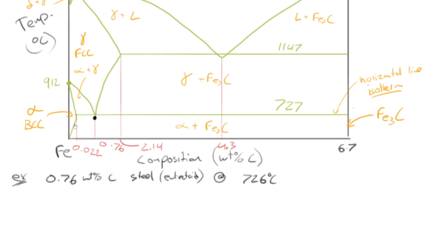And so what phases are present? Well, you can see you're within the boundaries of this two-phase region, alpha plus Fe3C. So we know there must be alpha plus Fe3C.